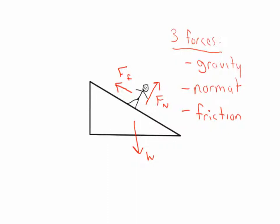Those three forces don't necessarily point along the x or y directions as before, so we need to choose a new coordinate system. In this case, we choose a coordinate system aligned with the surface of the hill: the x axis points along the slope, and the y axis points perpendicular to the surface. That way at least some of our forces line up with the axes. We'll also say that the hill makes an angle theta with respect to the horizontal, which will help us in a moment.